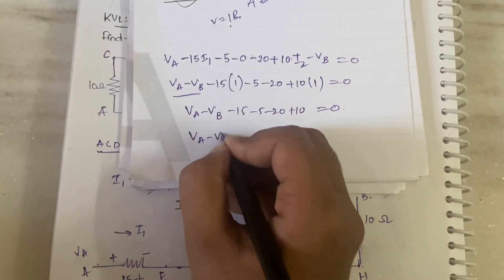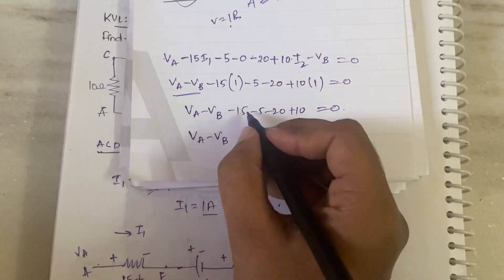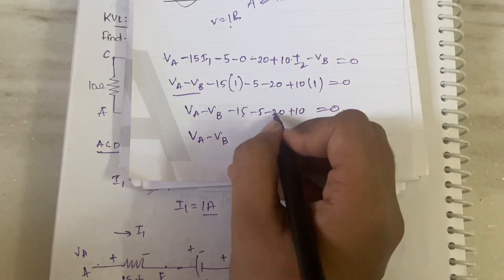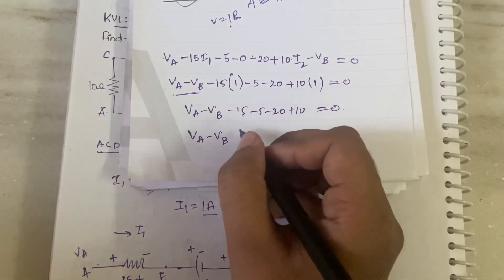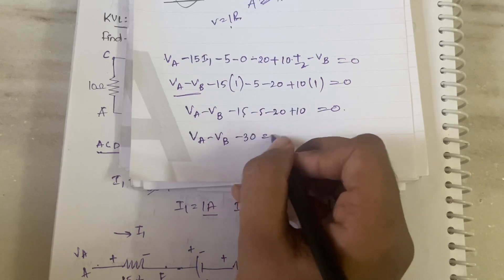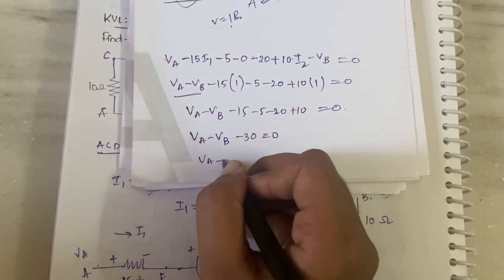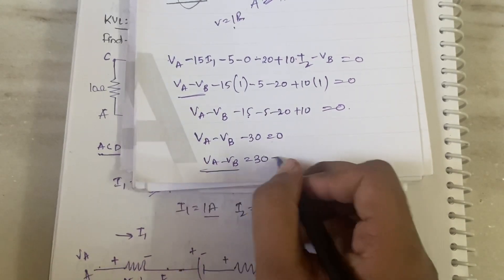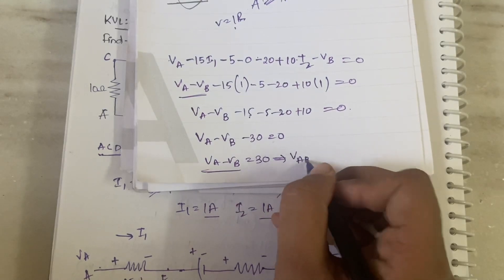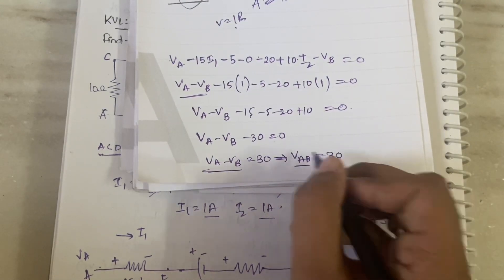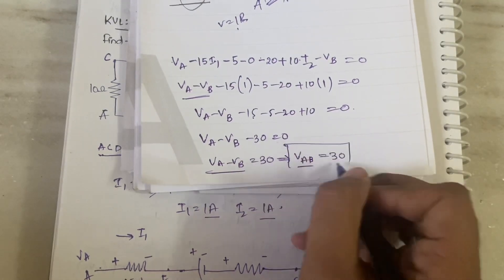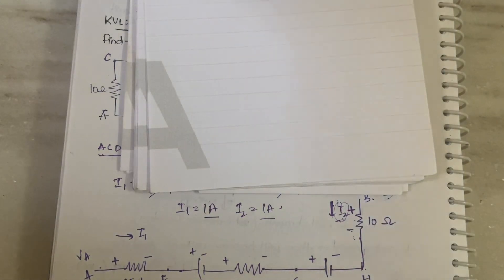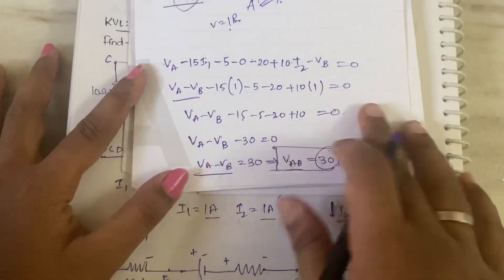Substituting I1 = 1A and I2 = 1A: VA − VB − 15 − 5 − 20 + 10 = 0, which gives VA − VB − 30 = 0, therefore VA − VB = 30V. The potential difference VAB between A and B is 30 volts, and since the result is positive, A is at higher potential.